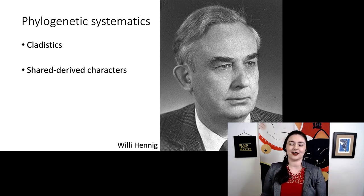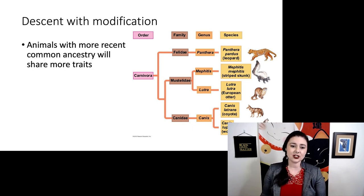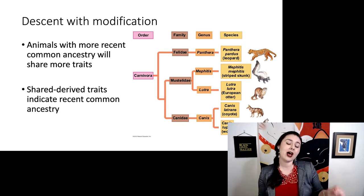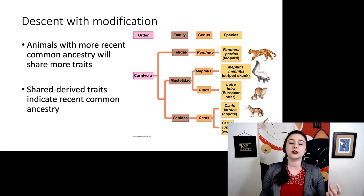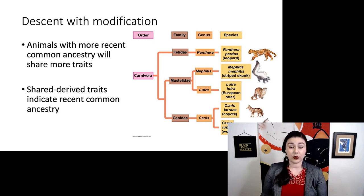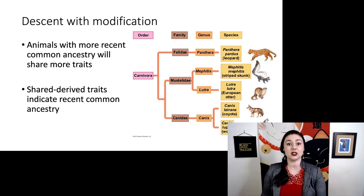Phylogenetic systematics comes back to the idea of descent with modification — going all the way back to Darwin. Under descent with modification, animals with more recent common ancestry will share more traits. Those shared derived traits give you evidence to say that two animals are more closely related to each other than to anybody else. For example, we would find more similar characters between the striped skunk and the European otter than any other two, and more traits in common between the coyote and the wolf — and by finding those traits, someone was able to construct the tree in the first place.